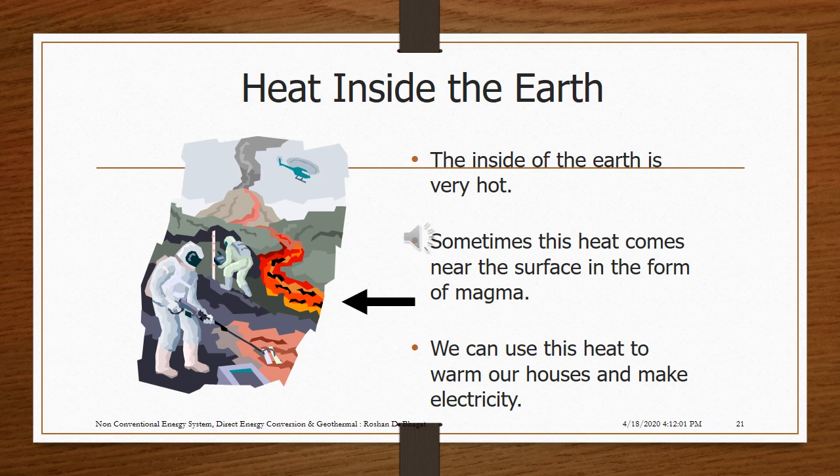The inside of the earth is very hot. Sometimes this heat comes near the surface in the form of magma. We can use this heat to warm our houses and make electricity.